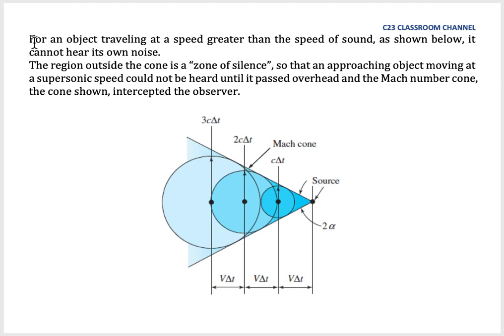For an object traveling at a speed greater than the speed of sound as shown below, it cannot hear its own noise. The region outside the cone is a zone of silence here, so that an approaching object moving at supersonic speed could not be heard until it passed overhead at the Mach number cone. The cone shown intercepts the observer.